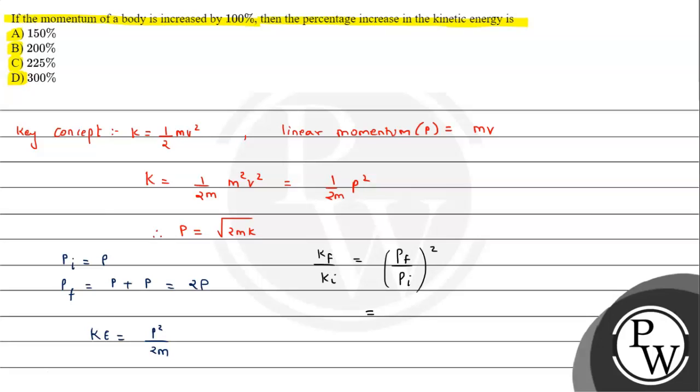So p final is 2p, so that squared gives 4. This equals 4 times k initial. Further we can say from here k final can be written as: if we suppose k initial kinetic energy was k, if we assume this as initial k, we can write this as 3k plus k.